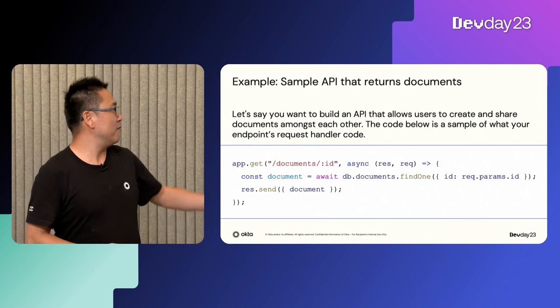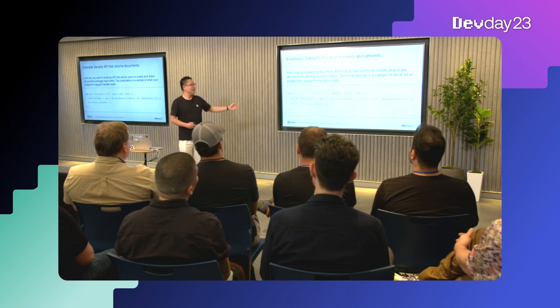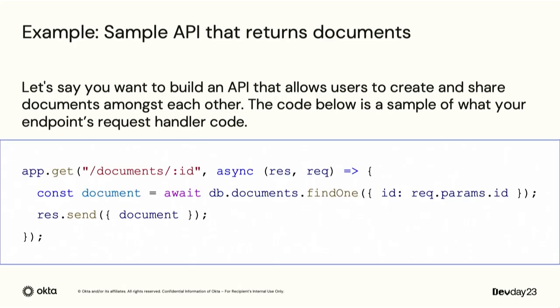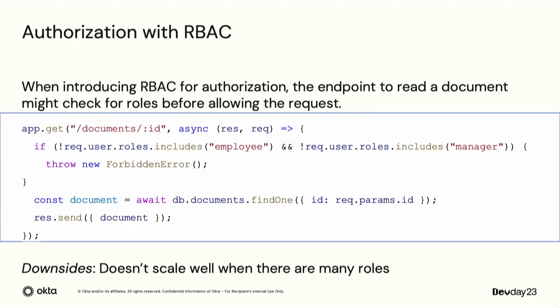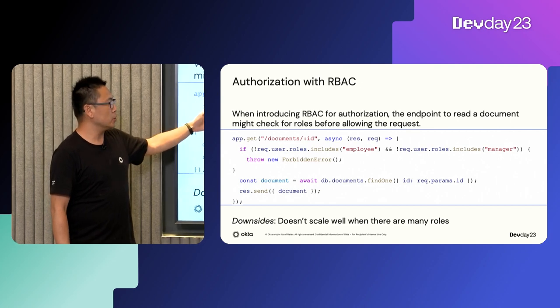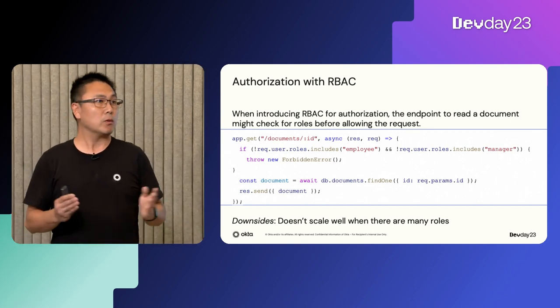We have a very simple API that returns a document, and we want to implement authorization on it. One way to address this is to use RBAC — role-based access control — where users can access resources based on their role. For example, if the user is an employee or a manager, they are allowed to access these documents; otherwise, we return a 403 forbidden error. This works well for most cases.